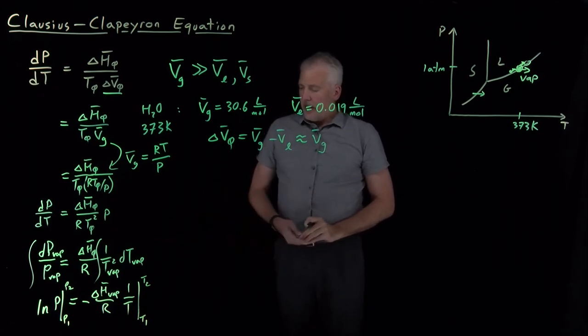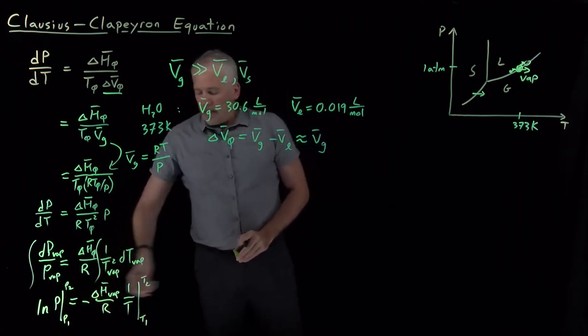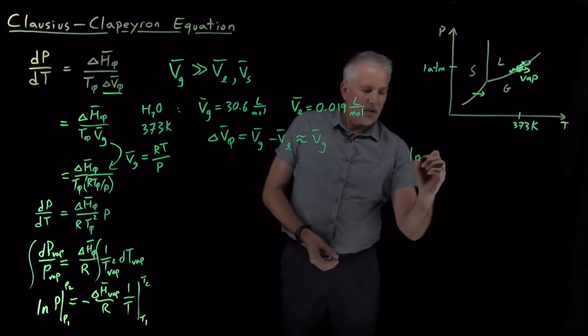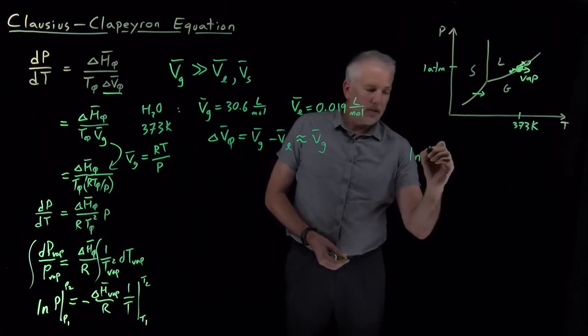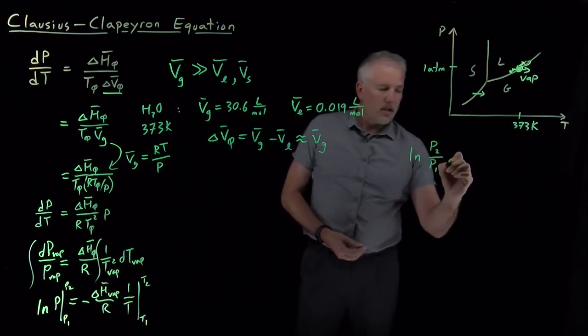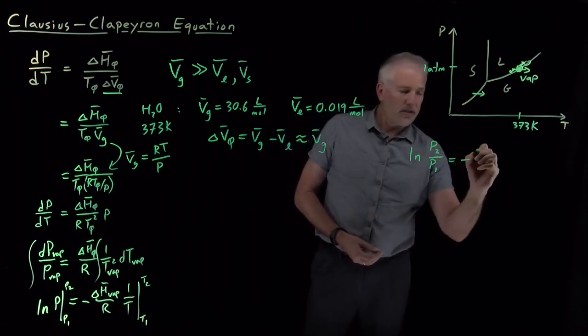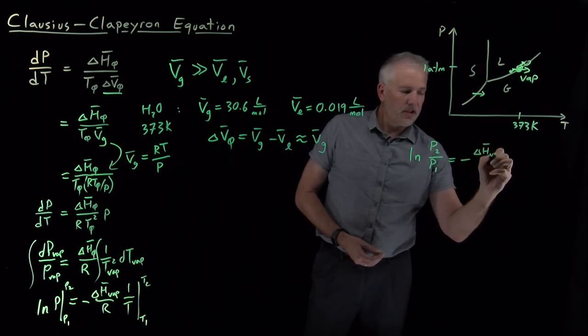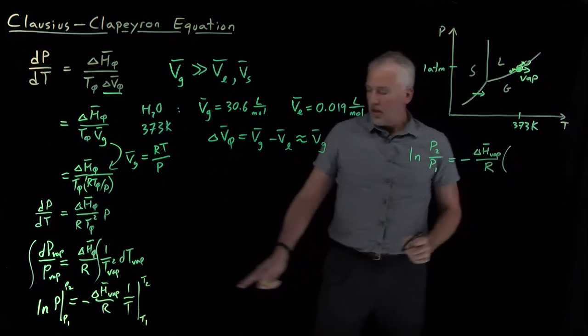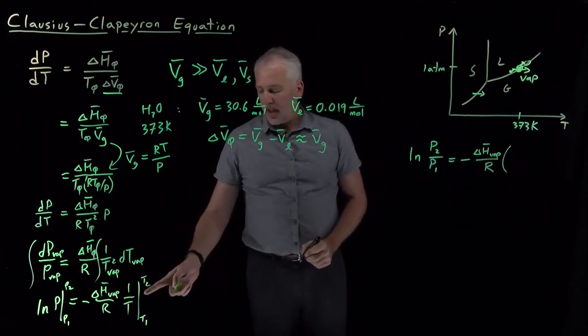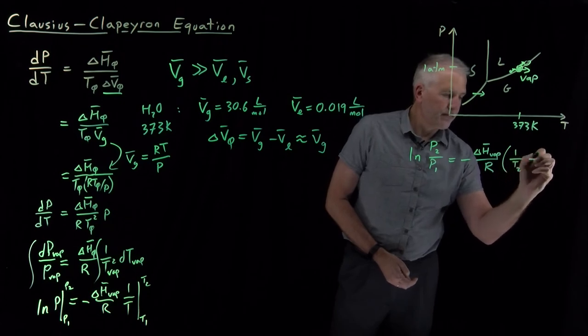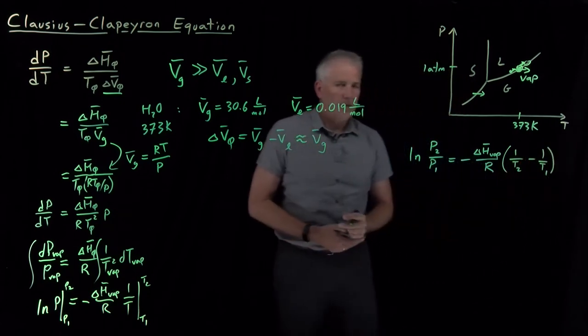So, now if I insert these limits into those expressions, I'll get, on the left side, natural log of P2 minus natural log of P1, which I'll write as ln of P2 over P1. And on the right side, I've got minus enthalpy of vaporization, one over T2 minus one over T1.